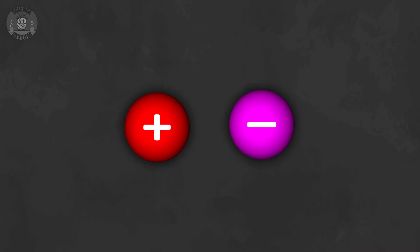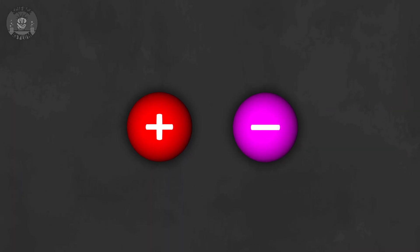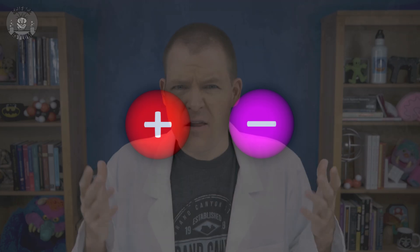Unlike mass though, charge has two different types or flavors. We call these two types positive and negative, but only for mathematical convenience. They're just labels. We could have just as easily called them up and down, or good and evil, or dingleberry and snozzberry.